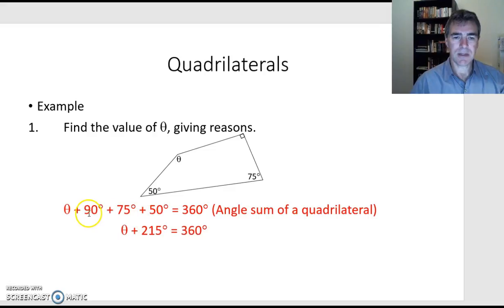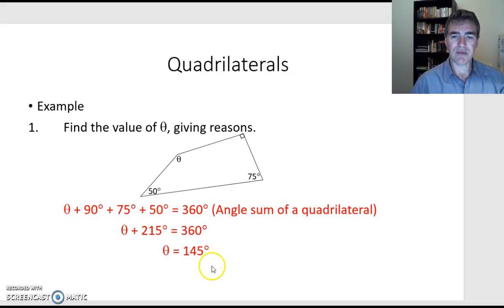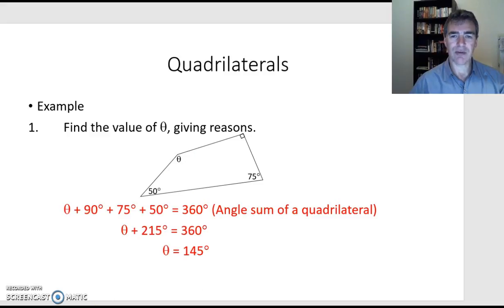Add up 90, 75 and 50 — we get 215 degrees. Then subtract 215 from both sides and we find this missing angle is 145 degrees. So that's how we use the angle sum of a quadrilateral to find a missing angle.